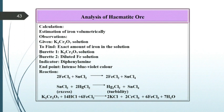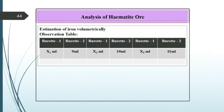Observations: Given K2Cr2O7 solution to find the exact amount of iron in the solution. Burette 1 contains K2Cr2O7 solution. Burette 2 contains diluted solution of iron. Indicator is diphenylamine. End point is intense blue-violet color. Reaction is as shown. Observation table: record all the readings as shown in the observation table.